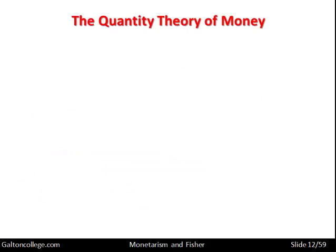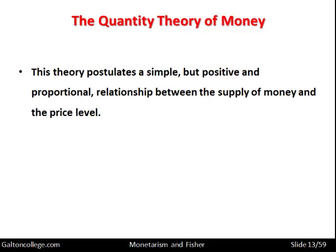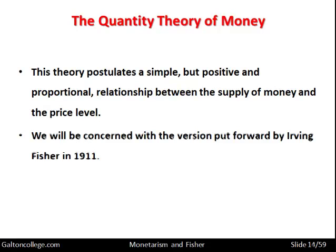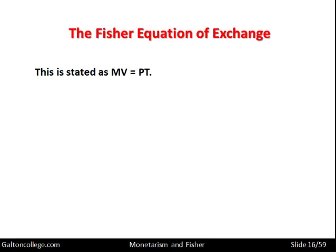This leads us to the quantity theory of money. This theory postulates a simple but positive proportional relationship between the supply of money and the price level. It was put forward by Irving Fisher in 1911 and states that MV equals PT — that's the Fisher equation.